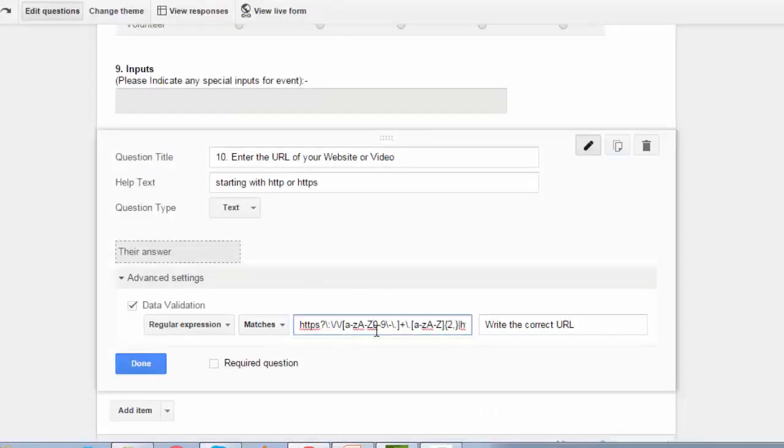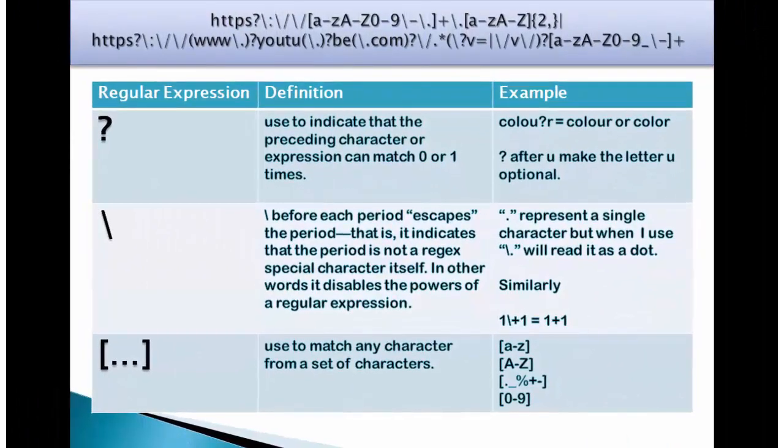This is syntax that has been used. This regular expression on website URL starts with https followed by a question mark. Let's understand what does this question mark mean. It's used to indicate that the preceding character or expression can match 0 or 1 times. So what that means is whether you write https or http both are valid. Then there is a colon that we normally use to write http colon forward slash forward slash and you can see a backslash coming twice. So purpose of this backslash is backslash before each period escapes the period. That is it indicates that the period is not a reject special character itself. In other words it disables the power of a regular expression. Few examples.